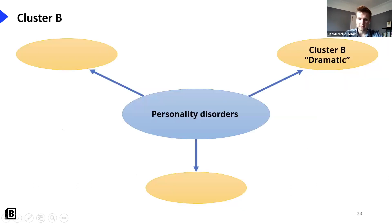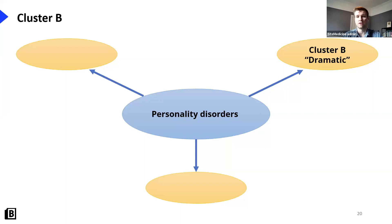That leads us to Cluster B — the dramatic cluster. This is the one you often know more about before medical school. You hear about the psychopath, associated with antisocial personality disorder, and borderline personality disorder, which is our EUPD. We'll go through each in turn.